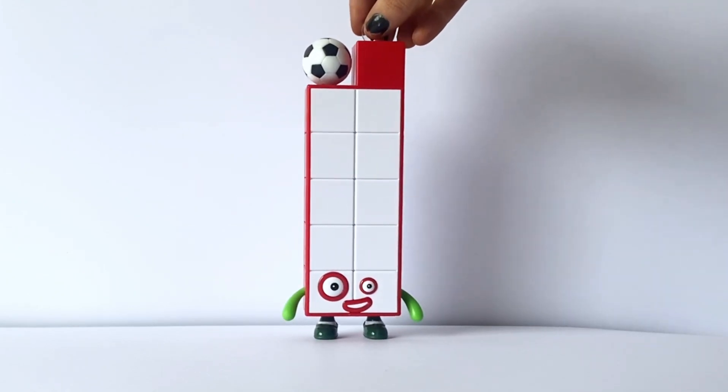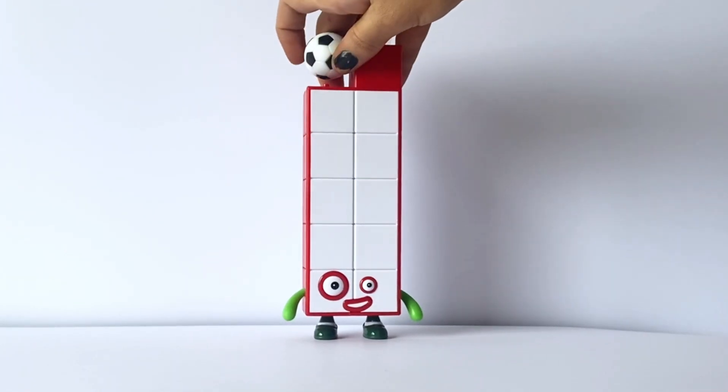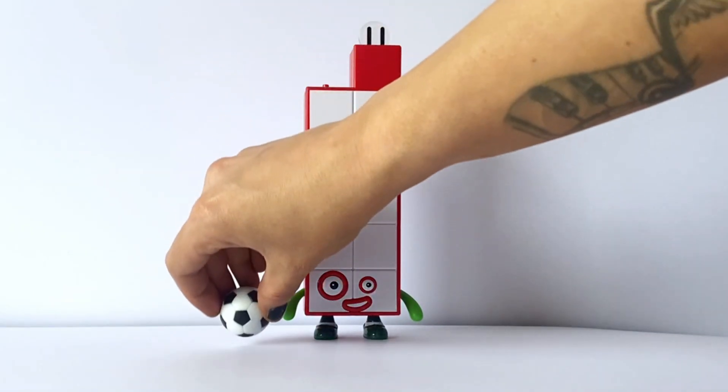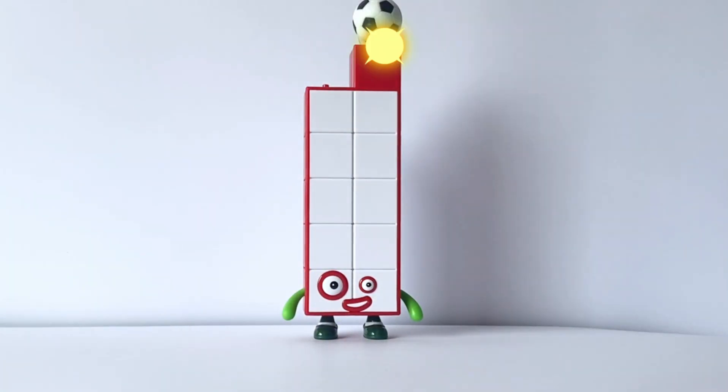NumberBlock 11 also comes with an accessory, which is the football, as NumberBlock 11 loves football. 1, 2, 3, 4, 5, 6, 7, 8, 9, 10 and 1 more is 11.